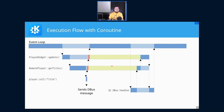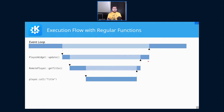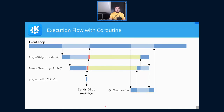Here's the same diagram for the blocking case — when we just wait for the DBus response. When waiting in a blocking manner, the event loop is not running at all during that entire wait. With coroutines, the event loop is executing most of the time. In reality it would be mostly running with only very small gaps.